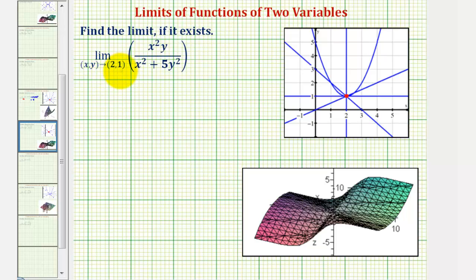But because it's approaching (2, 1) and the function is continuous at that point, we can assume there's a region where the function is continuous that contains this point, so we can find the limit performing direct substitution.